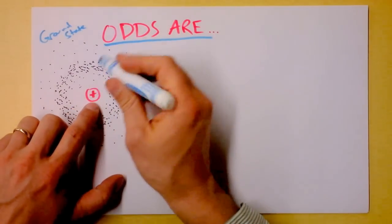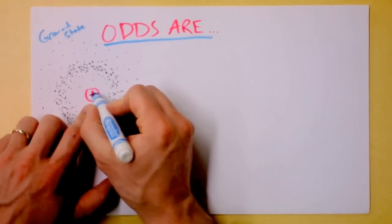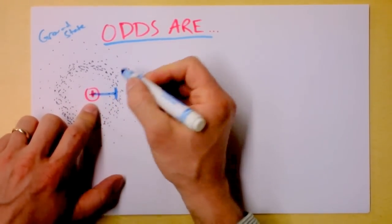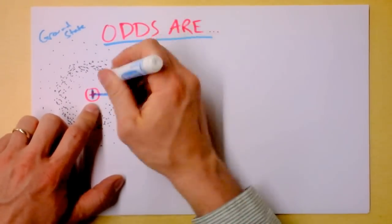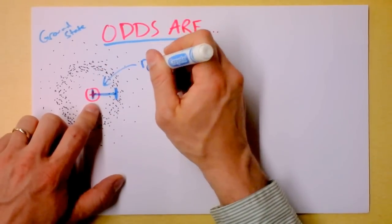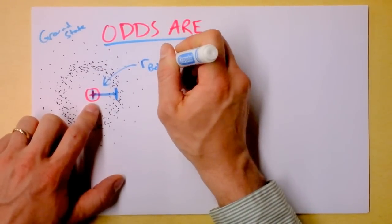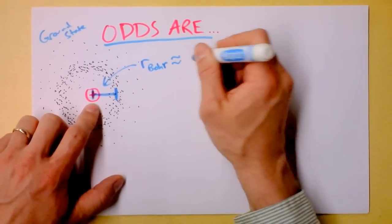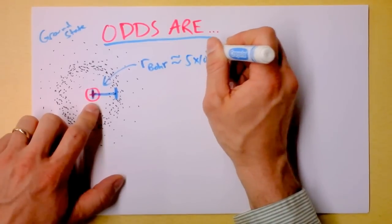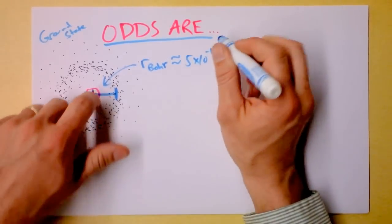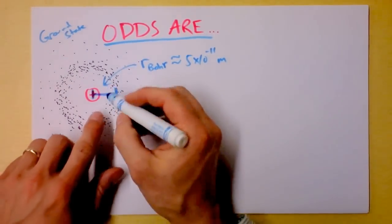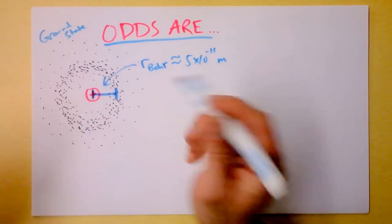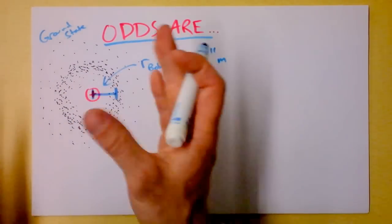But this distance right here between the center of the nucleus and the most likely location, this is in fact the Bohr radius. And the Bohr radius is about half an angstrom. It's something like 5 times 10 to the negative 11th meters. And this is the place that you would most likely find an electron.